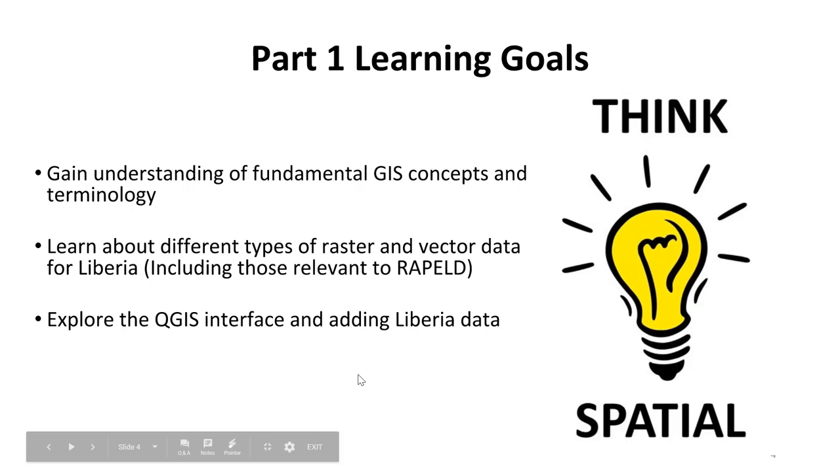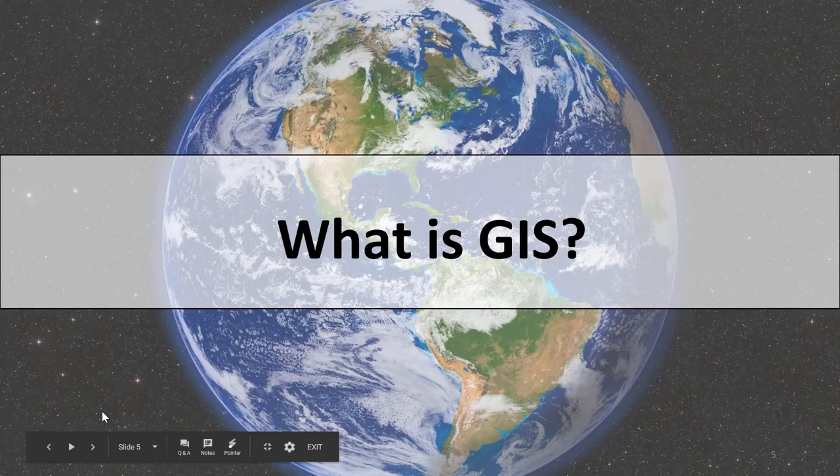Our learning goals for today are to gain an understanding of fundamental GIS concepts and terminology, to learn about different types of raster and vector data for Liberia including those relevant to RAPELD, and then to explore the QGIS interface and add Liberia data.